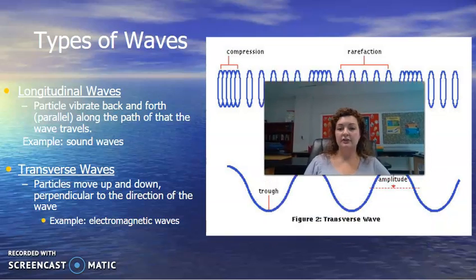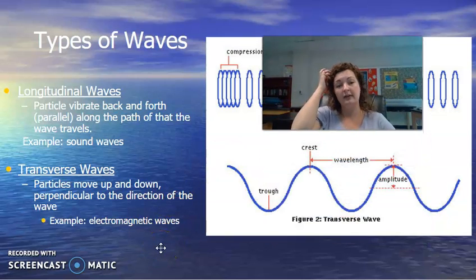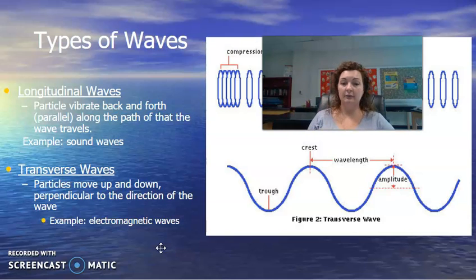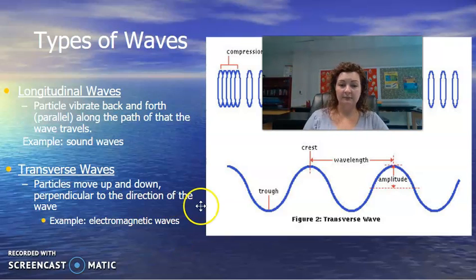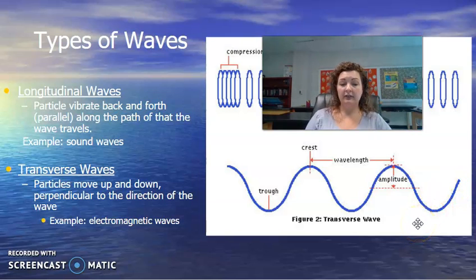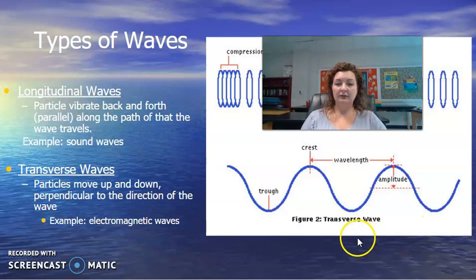I'm going to switch you and I'm going to show you our second type, which is a transverse wave. Particles move up and down, which is perpendicular to the direction of the wave. Perpendicular means it forms a right angle. So if you look at this wave, this is a transverse wave and it's labeled. A really good example of this would be electromagnetic waves, which are of course able to travel without a medium.